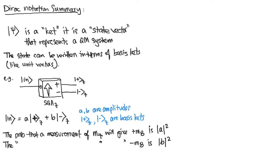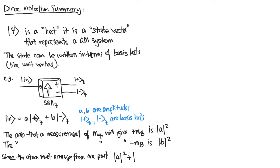Since the atom must emerge from one port — it's not going to get trapped in the system — we need those probabilities, a-squared and b-squared, to sum to one. And we call that the normalization condition.